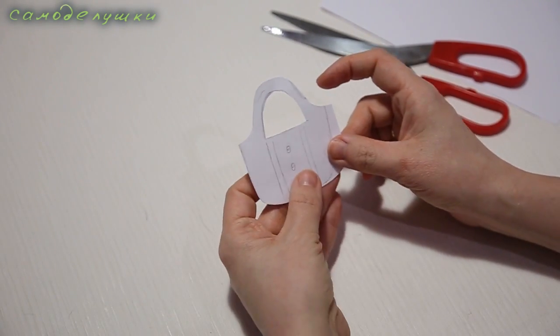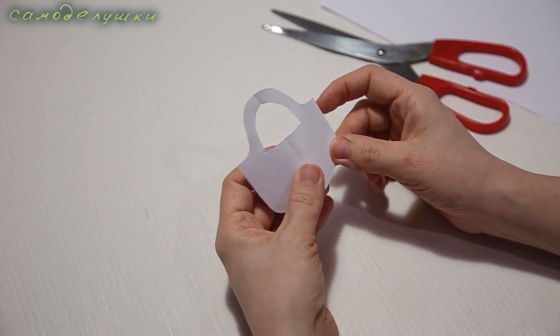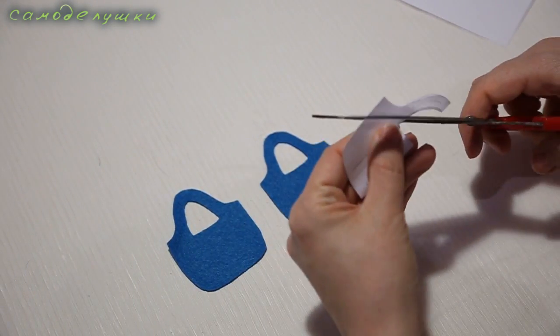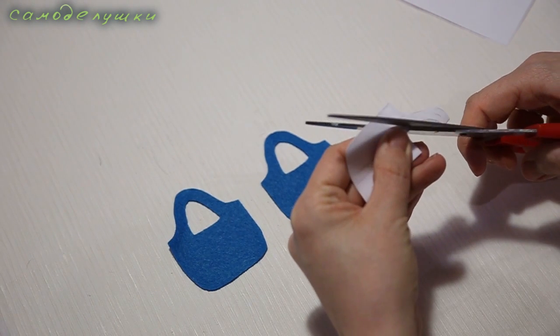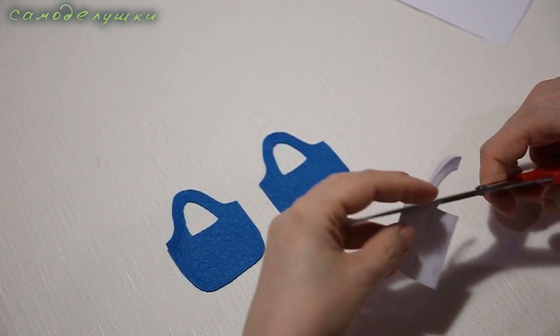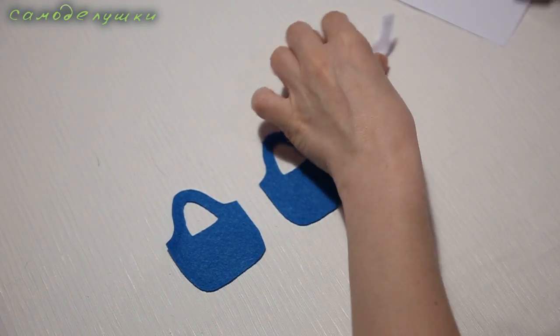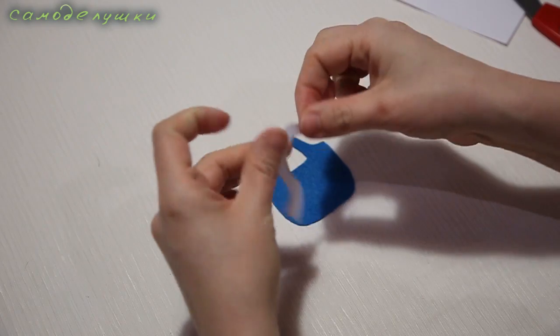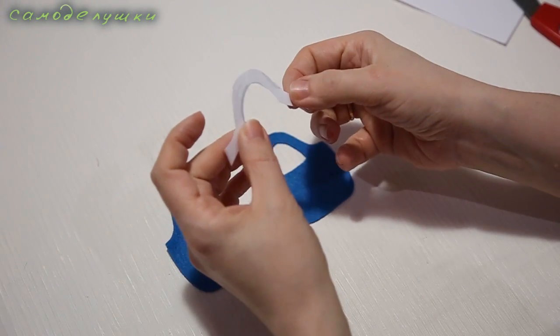Now I need to cut two such pieces from felt. Here are my two blanks for the future bag. Now I'll trim the handle like this. From the template I get this piece and I'll cut two such blanks from felt.